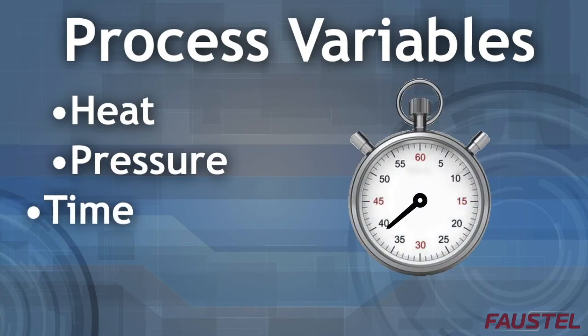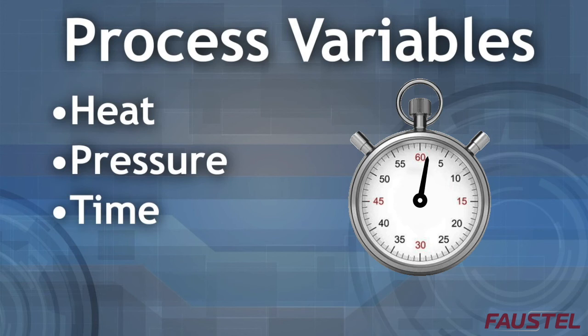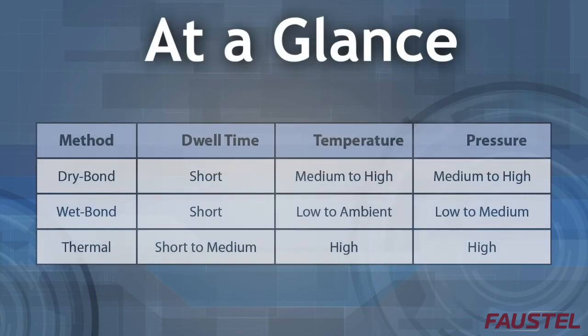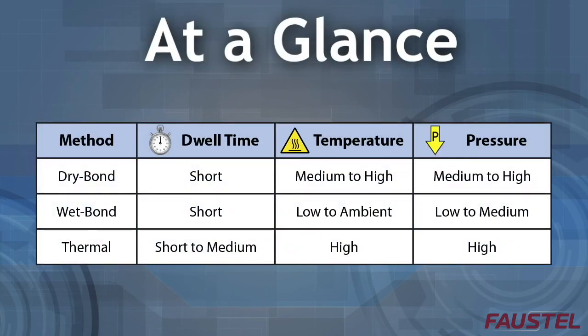We also control the time of dwell in the nip or in the heating zone. The table below provides a quick reference between the different types of lamination processes and their critical variables. We will cover these in more detail during future Tech Talk videos.